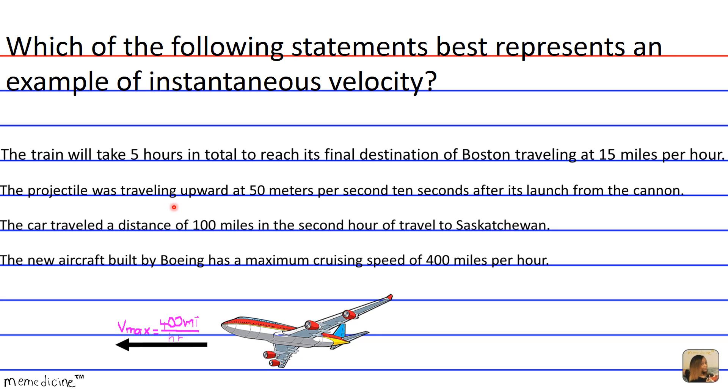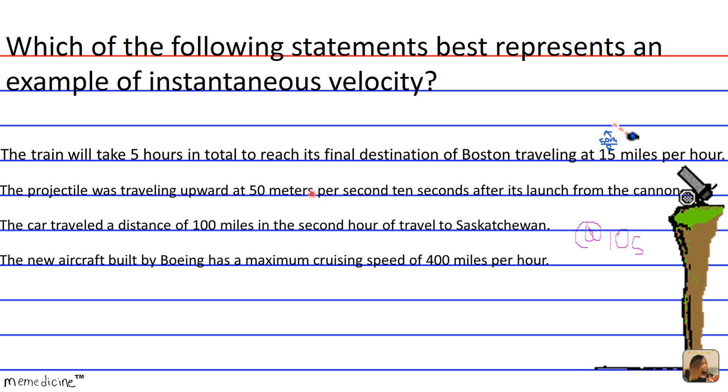We're eliminating it for the same reasons that we're eliminating A. But if the projectile was traveling upward at 50 meters per second for 10 seconds after its launch, then we know its instantaneous velocity. So the correct answer choice is going to be answer choice B because the projectile at a specific time, 10 seconds, is traveling at this velocity, 50 meters per second.